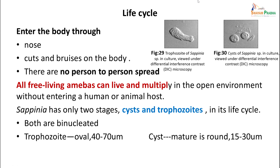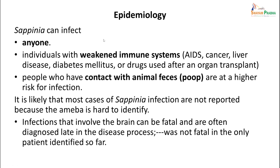The organism has two forms: a trophozoite form and a cyst form. They enter the body through the nose or cuts and bruises, but there is no person-to-person spread. All free-living amoebae can live and multiply in the open environment without entering a host. Both stages are binucleated — the trophozoite is oval, 40 to 70 micrometers, while the cyst is mature and round, 15 to 30 micrometers in diameter. Sappinia can infect anyone — both immunocompromised persons and healthy individuals in contact with animal feces are at higher risk. Most cases are likely not reported because the amoeba is hard to identify.